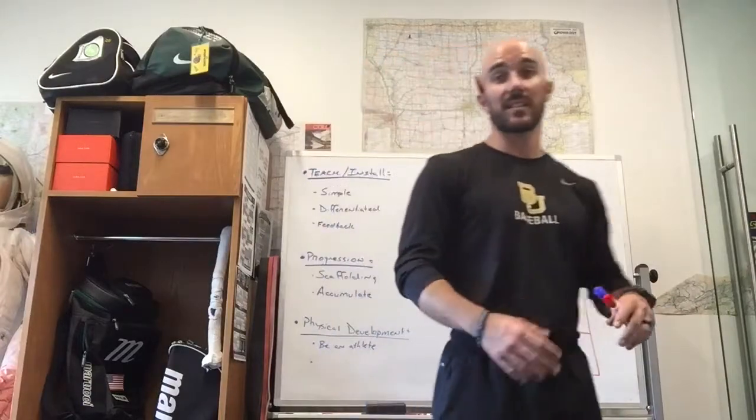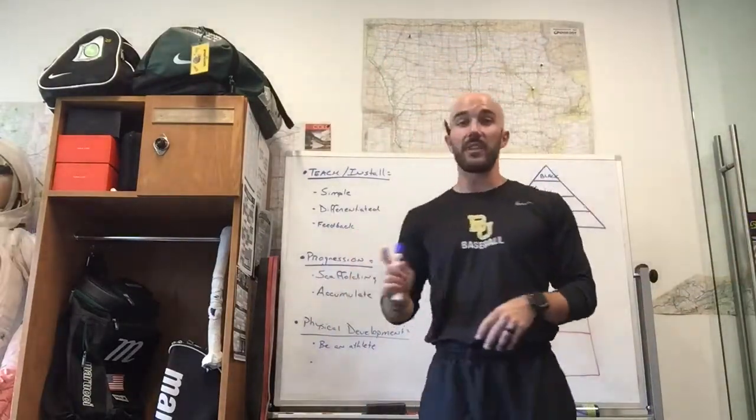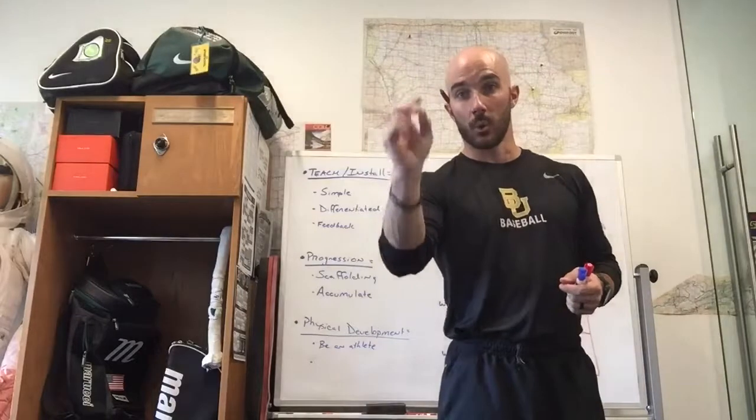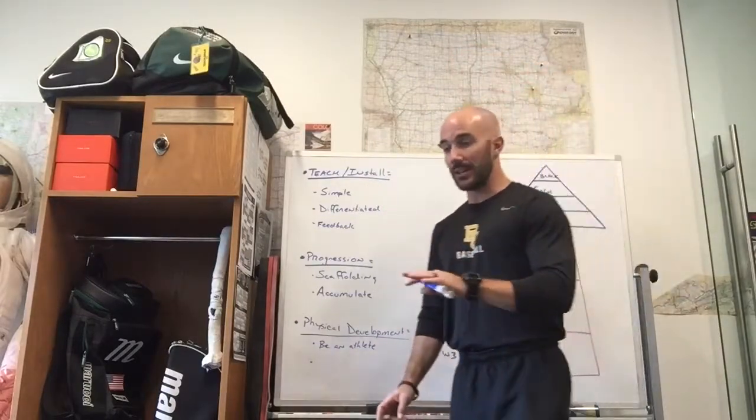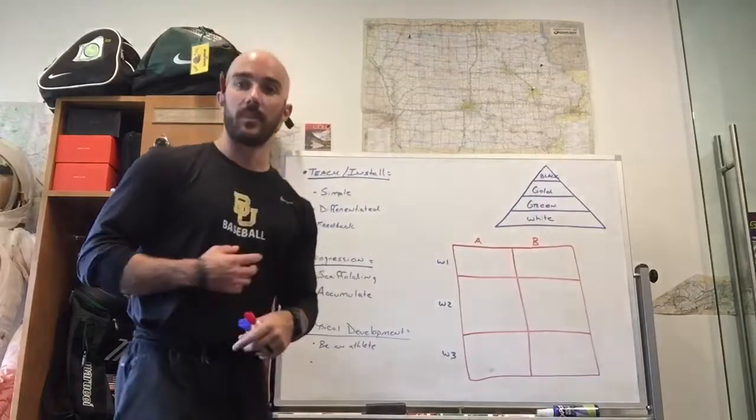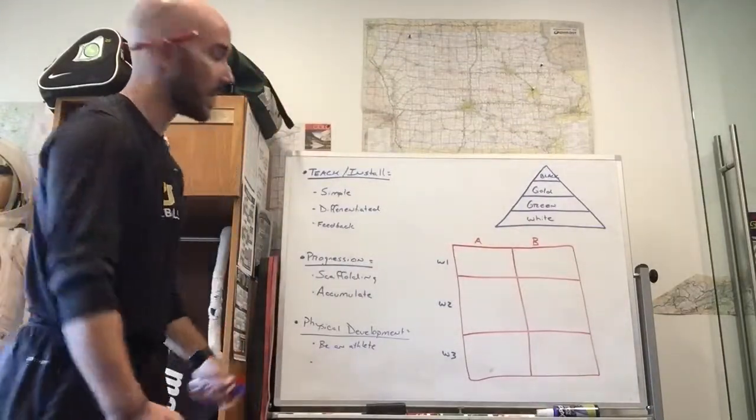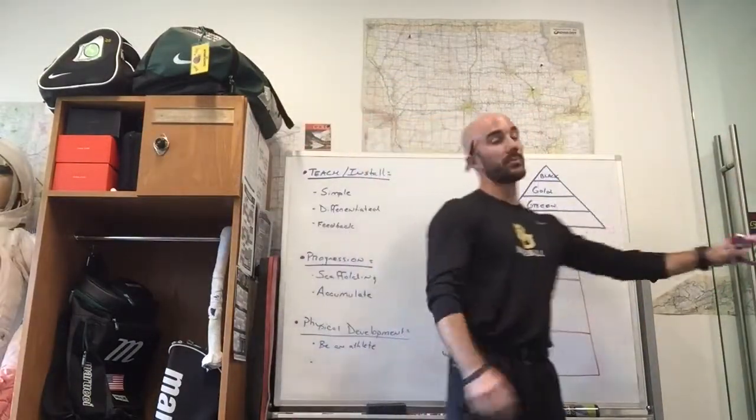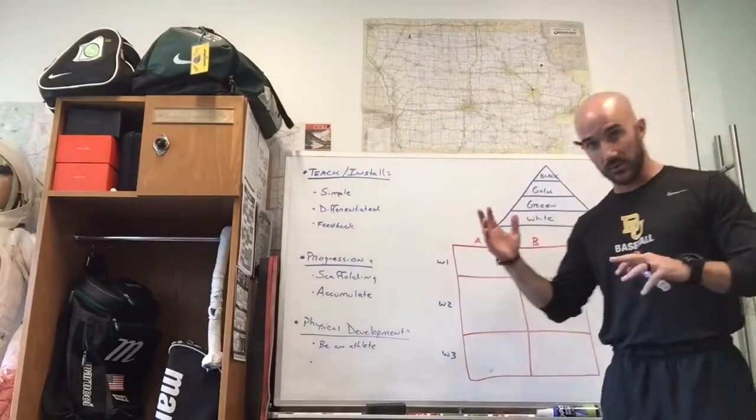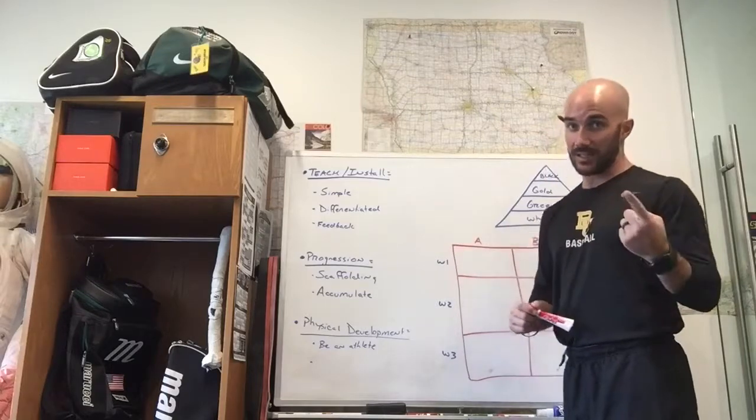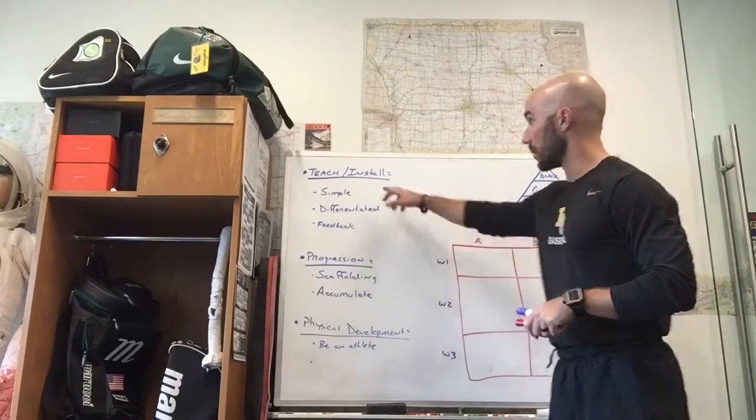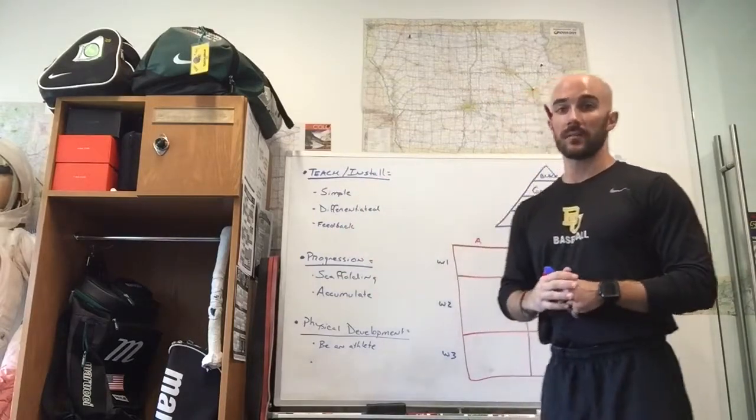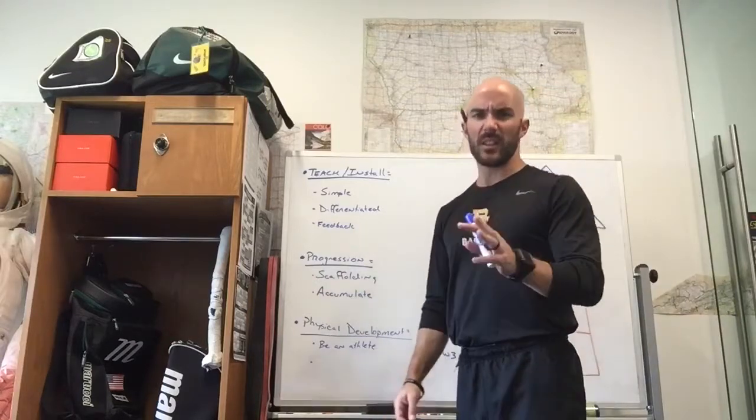Whereas specific feedback is feedback geared toward changing or maintaining a behavior on one or two athletes. The caveat here, in order to provide specific feedback, I have to be proximal or close to the athlete that I'm talking to. I can't be talking to the athlete on rack one if I'm standing next to rack twenty. I need to actually be proximal to that athlete, close to them so that I can see what's going on, I can observe and then I can provide feedback that's either going to continue that behavior or change that behavior. So when I'm teaching, I need to be simple. I need to differentiate or be able to teach to a lot of different types of learners and I want to be able to provide very specific feedback.